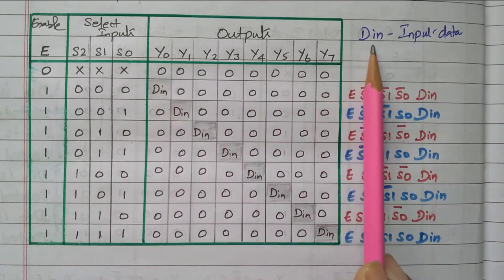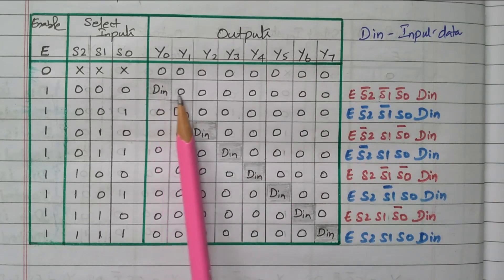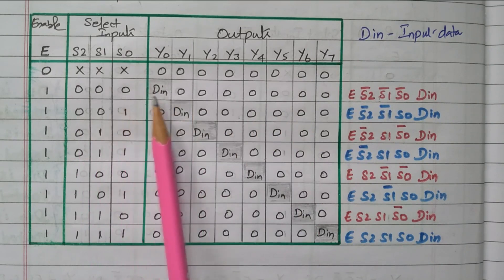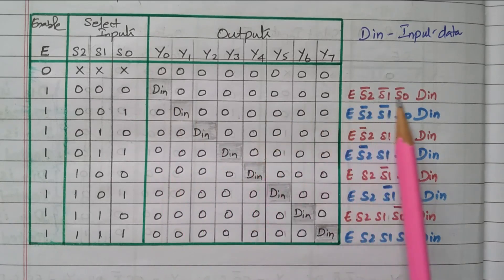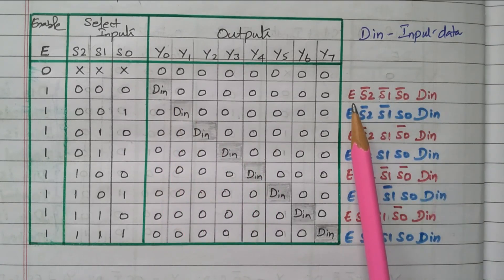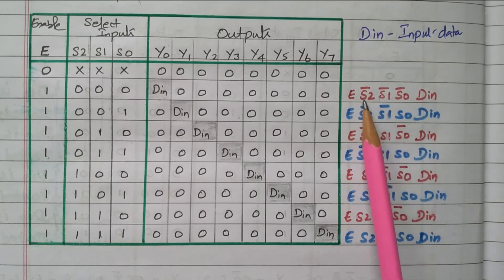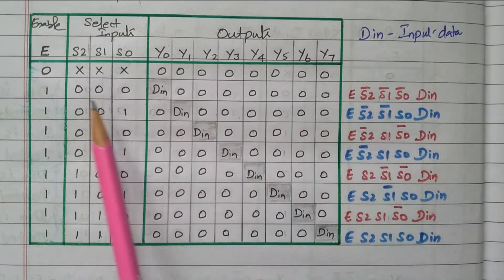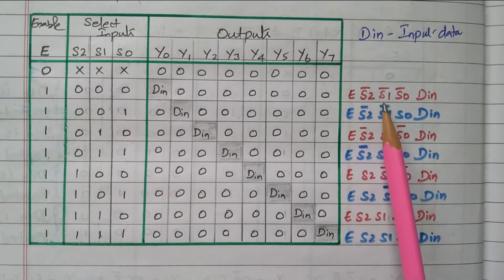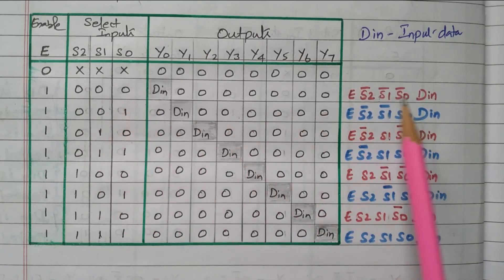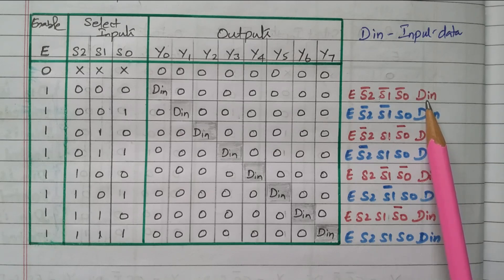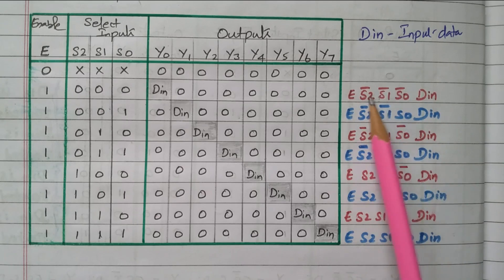For the combination S2=0, S1=0, S0=0, the input data D_in is available in the first position (Y0); the remainings are 0. The expression uses the complement: since the selection inputs are all 0, they are connected with complements — S2_bar, S1_bar, S0_bar — so they automatically become 1. With enable also 1, all inputs to the AND gate are 1, and the data is available in the first position.